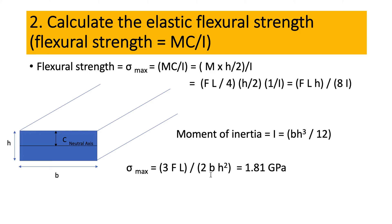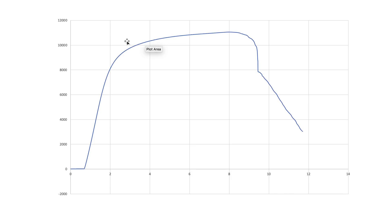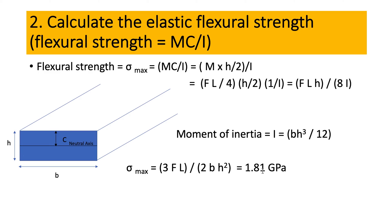If you go back to your data and you select a point here and you plug in all the values, you will end up with 1.81 gigapascals, which is the flexure strength for the specimen that we have and that we give to you.